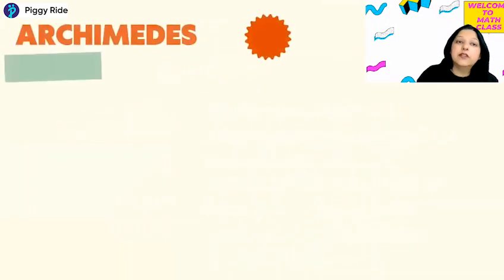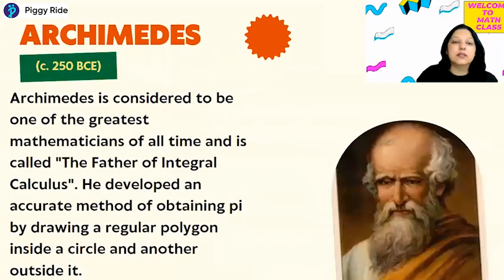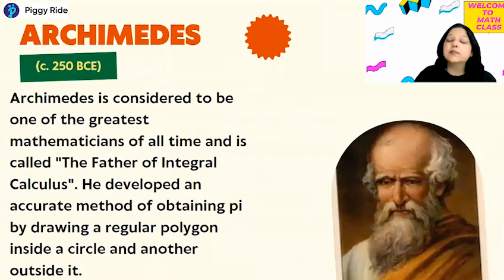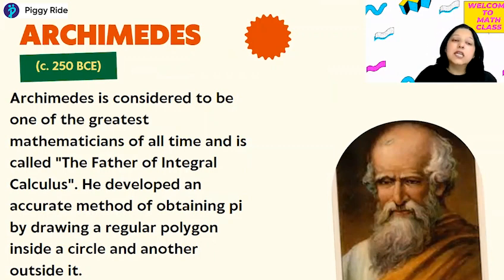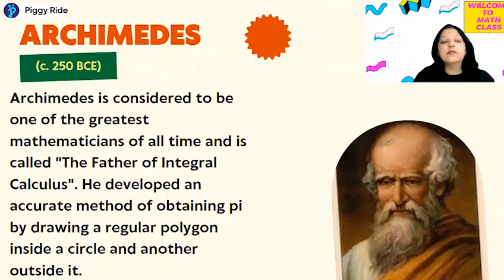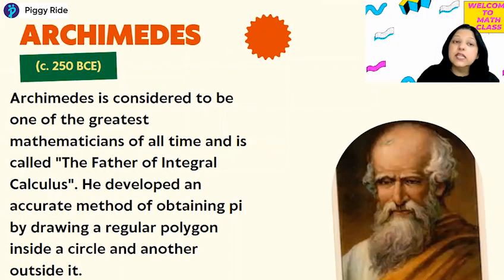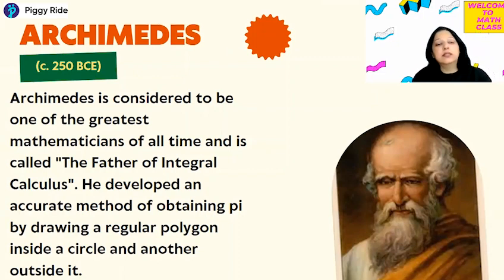After the Egyptians, Archimedes — who is considered one of the greatest mathematicians of all time and is also called the father of integral calculus — developed an accurate method of obtaining pi. He drew a regular polygon inside a circle and another polygon outside it to estimate the value.